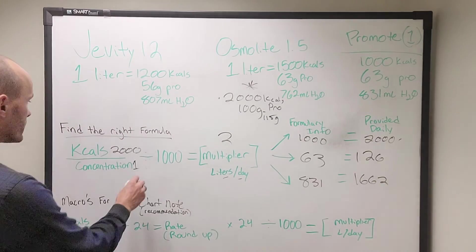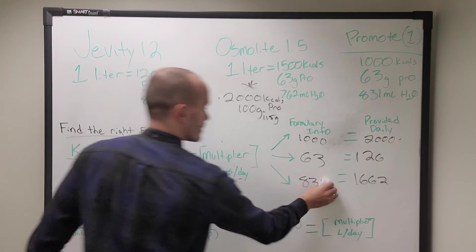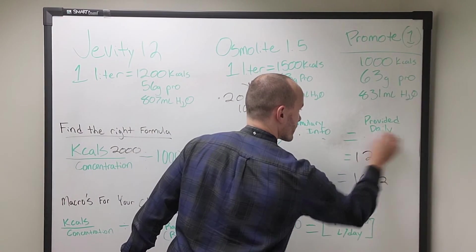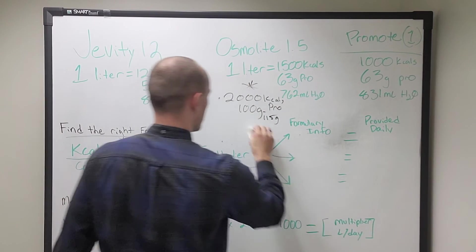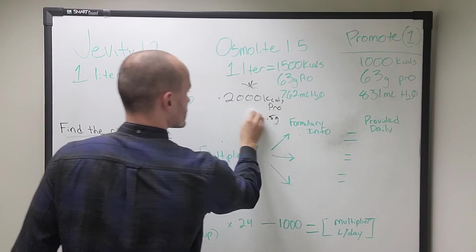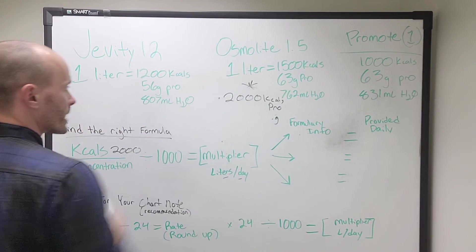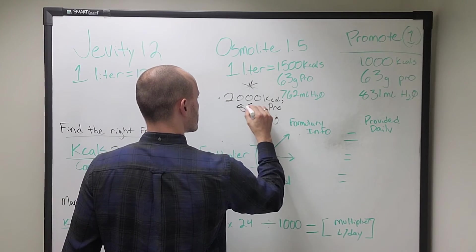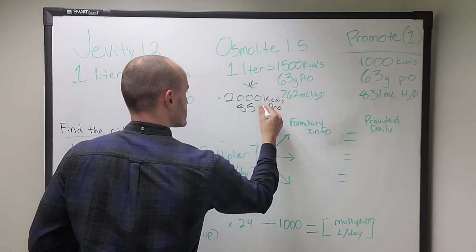So let's go back just because I think this is an easier example. We're going to erase this. We're going to have a new hypothetical patient here. This is going to be fun guys. So what we're going to do, we have a patient here that hypothetically needs 2000 calories per day. And let's say they need 85 grams of protein per day. Get rid of this.